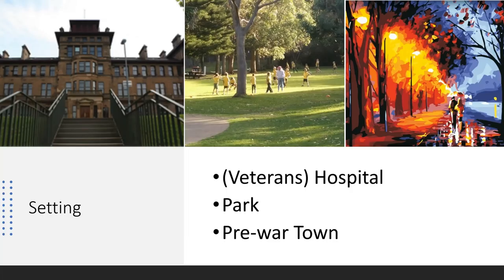As for the setting of this poem, it takes place in a veteran's hospital, where a lot of the present takes place. In the present state, our persona, our character, is in a hospital healing and mending from his wounds. The poem also makes a brief mention of a park outside the hospital, as well as a town — which is where the persona lived prior to joining the war. Post-war, he's in the hospital; pre-war is his town.